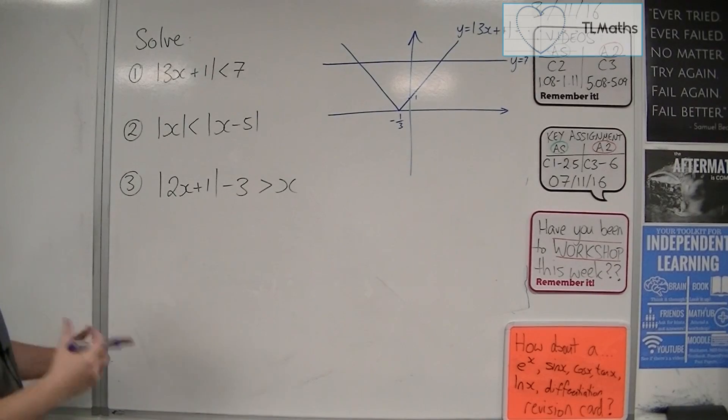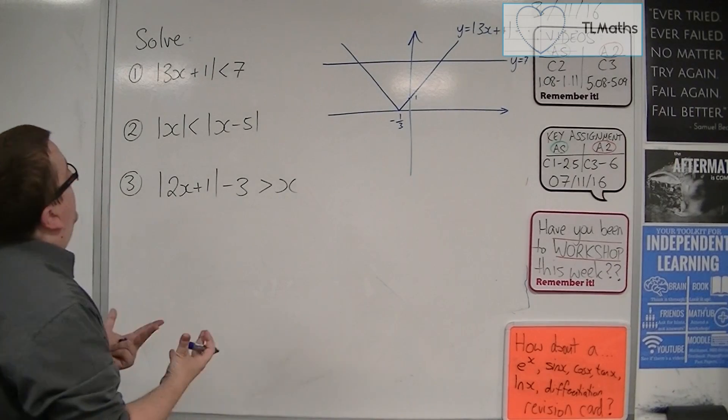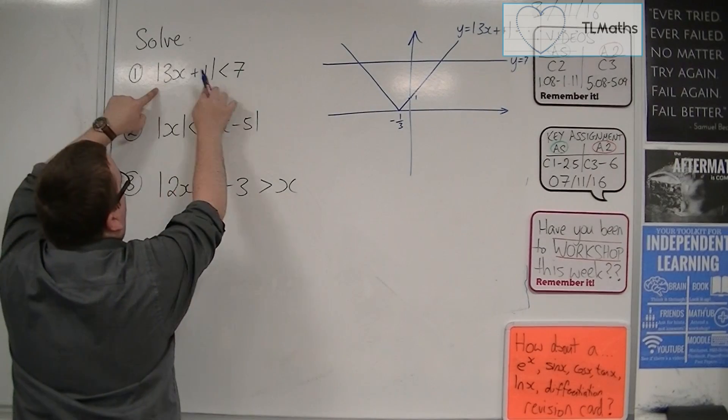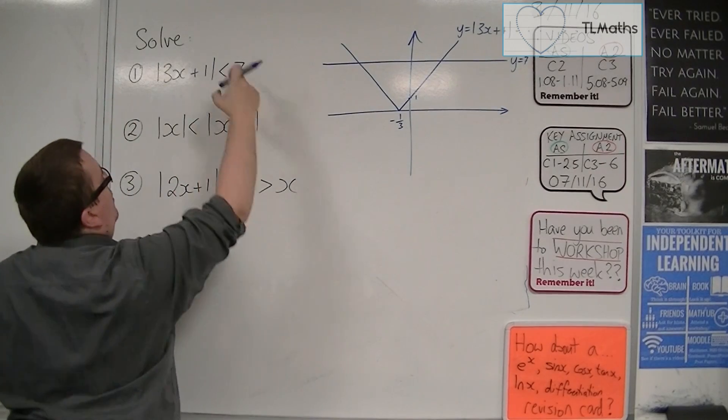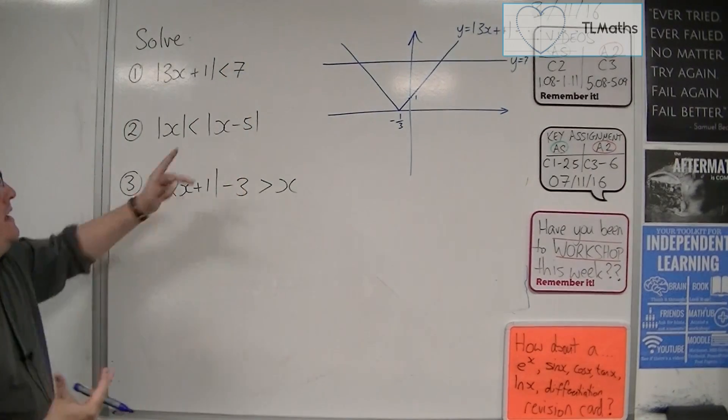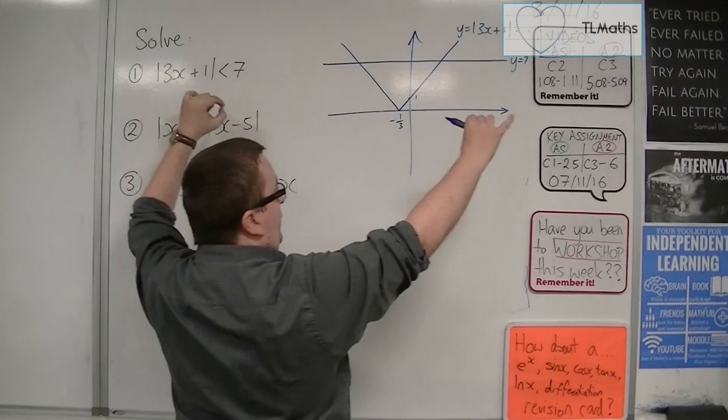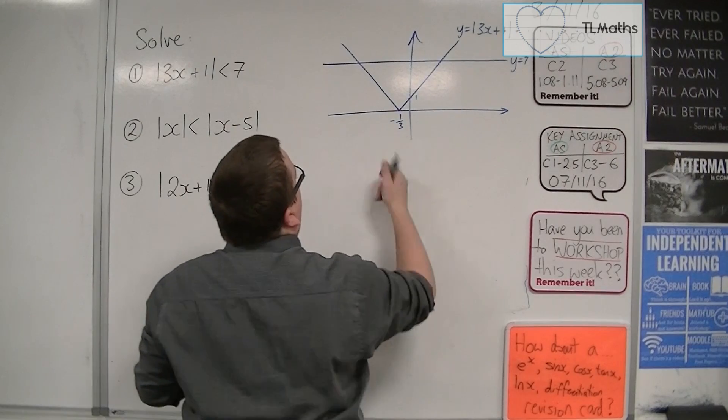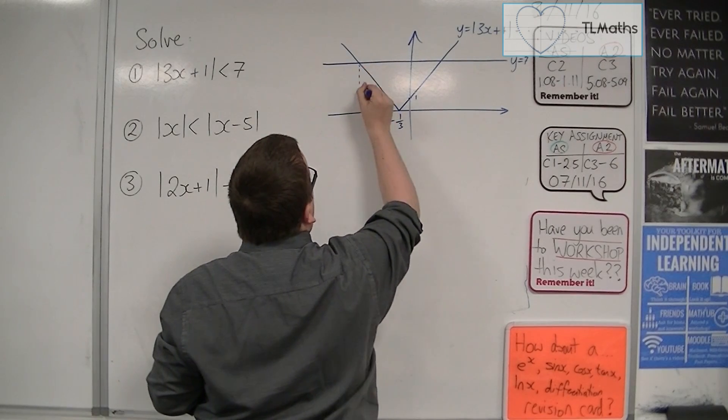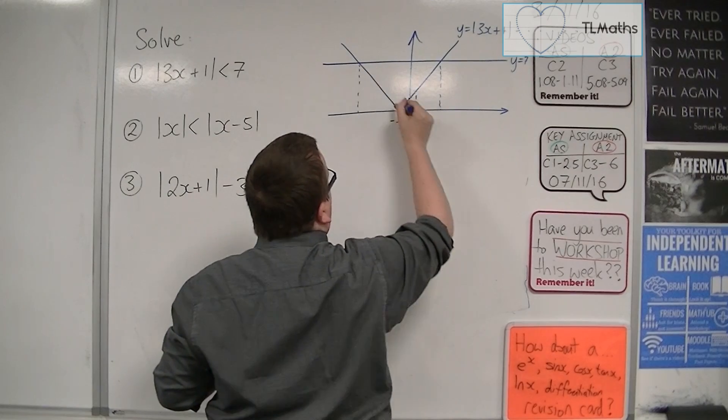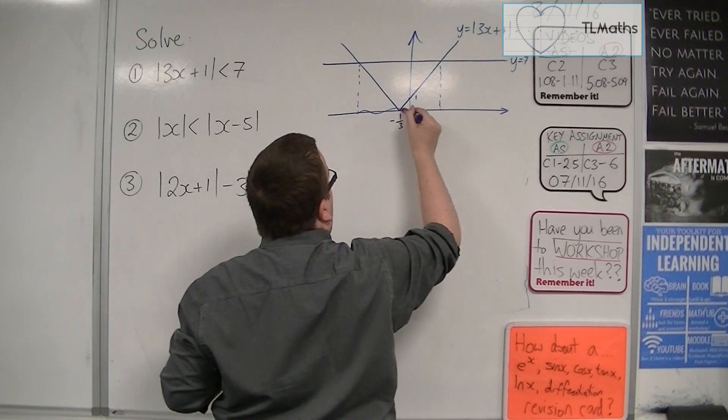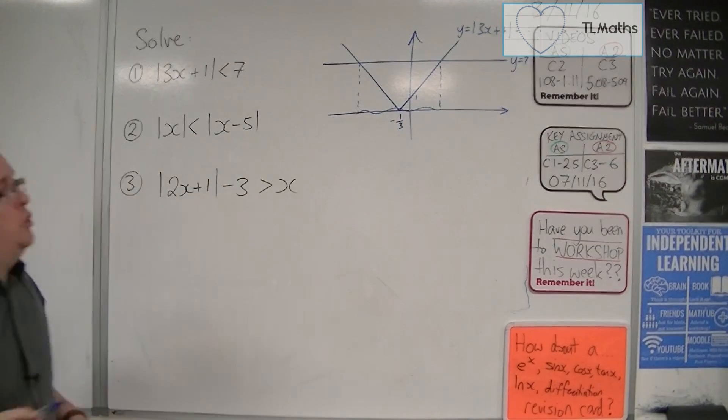So now what I'm being asked is where is this graph below this one? Where is the v-shape, effectively, below the horizontal line y equals 7? And it's below it between these two values. We can see it's below there. So I want that single region.